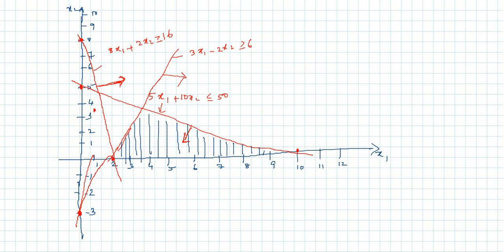The corner points of the feasible region are: (2, 0), (10, 0), and a third point obtained by solving 5x1 + 10x2 = 50 and 3x1 − 2x2 = 6 simultaneously, which gives (4, 3). So altogether the three corner points are (4, 3), (2, 0), and (10, 0).